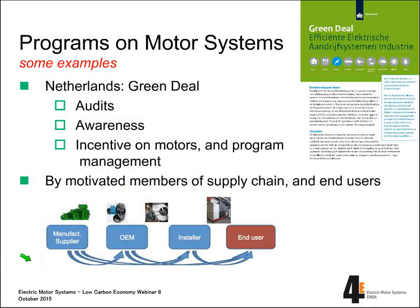Another example is the Dutch program called Green Hill — an audit program also targeting awareness-raising activities for end users on motor system possibilities. It involved motivated members of the supply chain, including manufacturers and installers, who together with end users performed these audits.